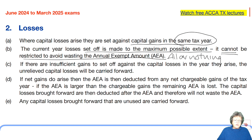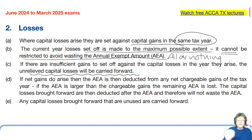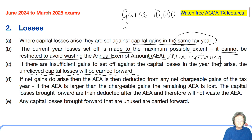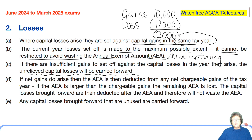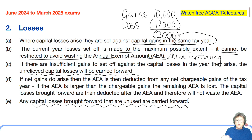If there are insufficient gains to set off against capital losses in the year they arise, any unrelieved losses would be carried forward. For example, if we had net gains from two assets of 10,000 and a loss of 12,000, then we have surplus losses. We've wasted our annual exempt amount, which cannot be transferred or carried forward, and that loss of 2,000 would be carried forward to the next year. If net gains do arise, the annual exempt amount is deducted from those gains. If the AEA is larger than the gain, the remaining AEA is lost — it cannot be transferred. And losses brought forward that are unused are carried forward.